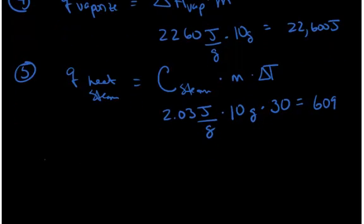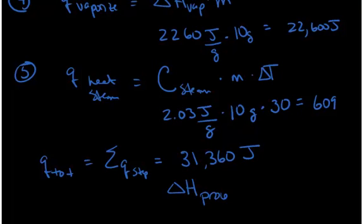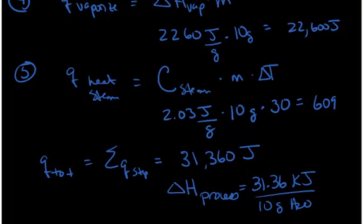The total heat is equal to the sum of the heat from all the steps. Adding all those numbers gives 31,360 joules — a positive value. So the change in enthalpy for this particular process equals 31.36 kilojoules for the 10 grams of water. Because enthalpy is a state function, we can figure out the change in enthalpy for the entire process: warming ice, melting ice, warming water, vaporizing water, and heating steam.